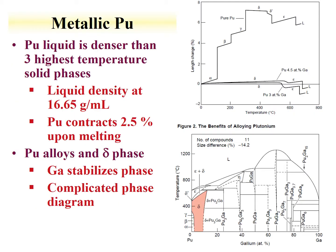For plutonium metal, the liquid is denser than the three highest-temperature solid phases: liquid density is 16.7 g/mL, while the three highest-temperature solid phases are less dense. For this reason, materials made with plutonium are often alloyed so that behavior can be consistent. A figure shows phases as a function of temperature for pure plutonium metal and plutonium alloyed with gallium; the gallium stabilizes the delta phase over a very large temperature regime with minimized length change.